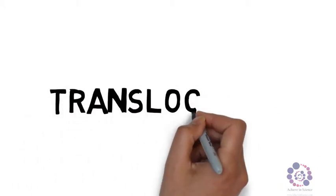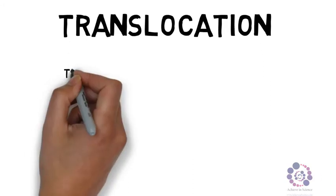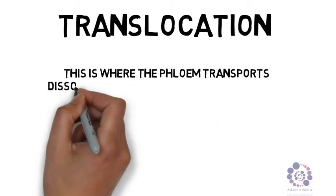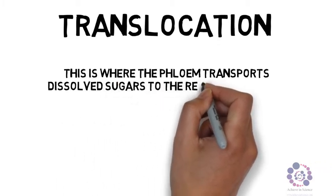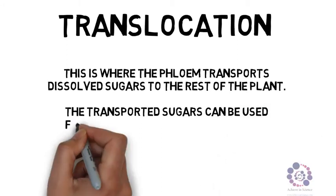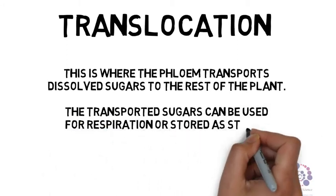Finally we need to look at another process called translocation. This is where the phloem, not the xylem, the phloem transports dissolved sugars to the rest of the plant. The transported sugars can then be used for respiration or stored as starch.